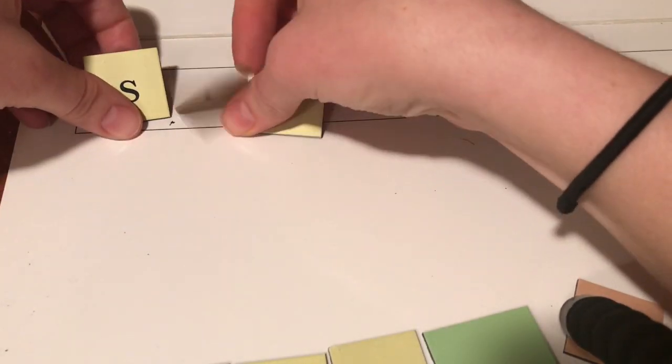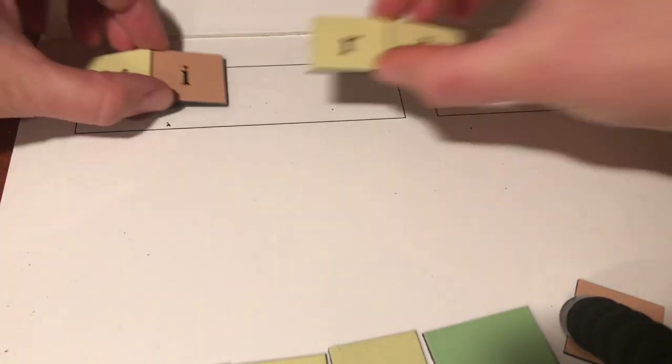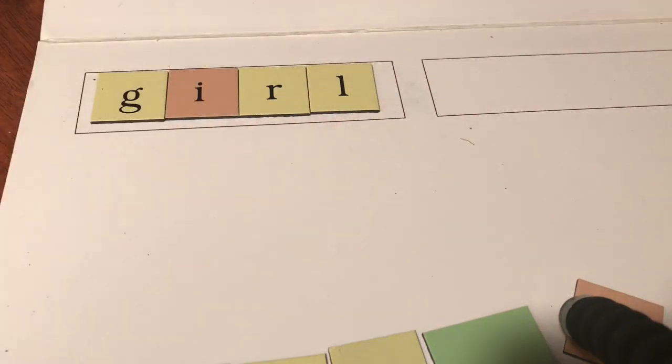Now, spell the word girl. I am a girl. Girl. Girl is spelled G-I-R-L. Girl.